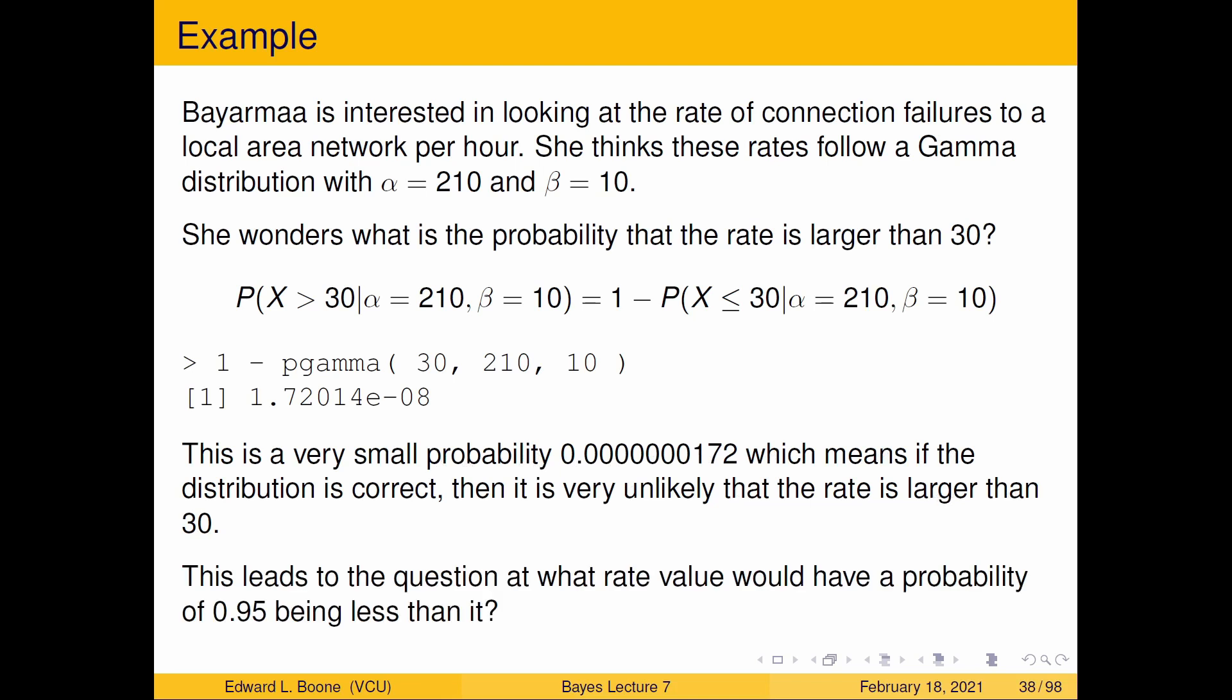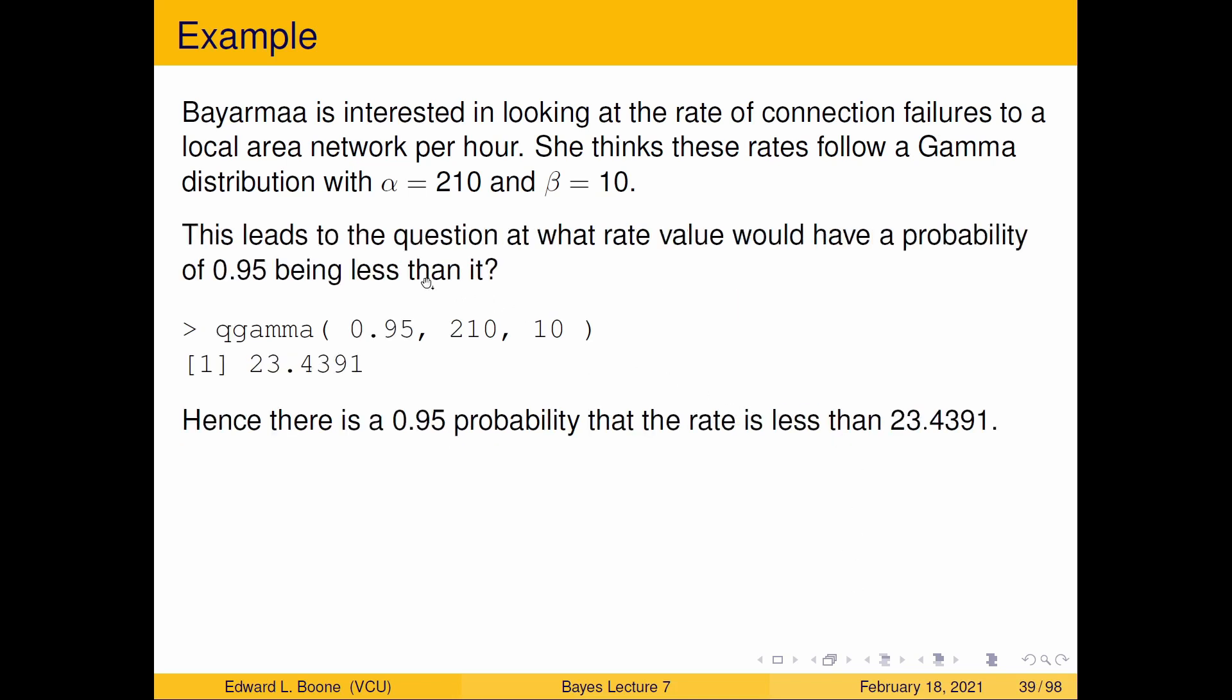Let's lead us to the question. At what rate would have a probability of being 0.95 or less? So we want it to have a probability of 0.95, and we want to find the value that's associated with that so that we know any value less than the particular value we've found is reasonable. All right, so what we can do is the qgamma function. Put in 0.95, 210, 10, and we end up with 23.4391. So, this gives us a good idea what an upper bound might be for the rate.